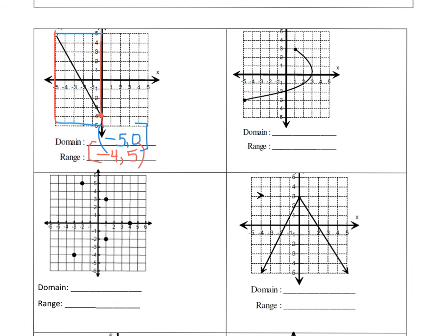Pause the video, try number 2 on your own — domain and range — then check if you got it correct for a ticket. The domain goes from negative 5 to positive 3; both are solid endpoints so I would bracket both: [−5, 3]. For the range, my least y-value is negative 3 and my greatest is positive 3, and again both are solid endpoints, so I bracket both: [−3, 3].